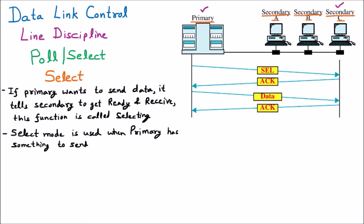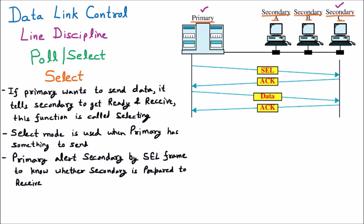Primary alerts the secondary by sending a select frame to know whether the secondary is prepared to receive. A frame is sent from primary to secondary — this frame is called the select message. Select means it is asking the secondary: 'Are you ready? Should I send the data to you?' The select frame is sent only to the target secondary, which in this case is C.